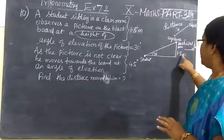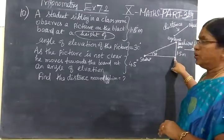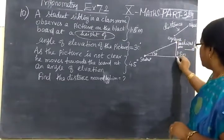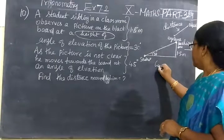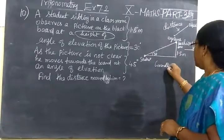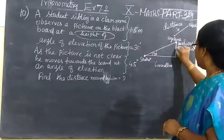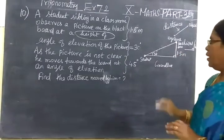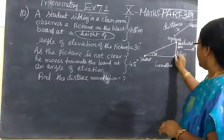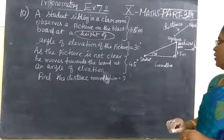1.5 meters is the height of the board. So the board is here. This is ground level. This is ground level. Height of the board is 1.5 meters. Height means definitely it should make 90 degrees with the ground level.